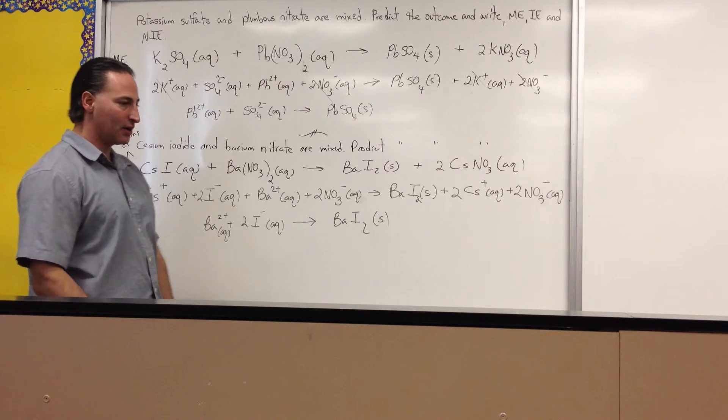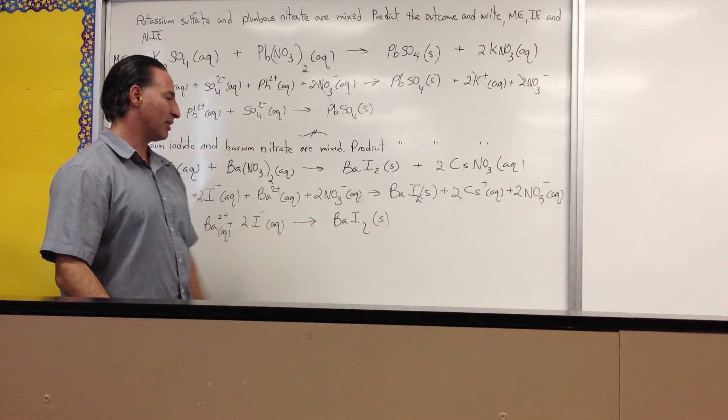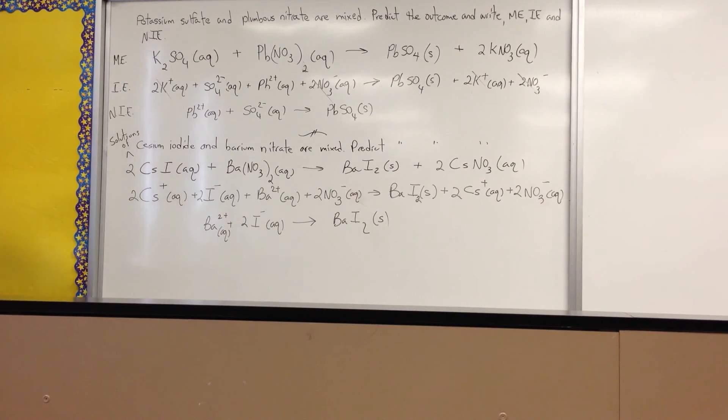When you cancel out the spectators, you're left with the net ionic equation. Barium combined with iodide, you get your barium iodide. Any questions? Okay.